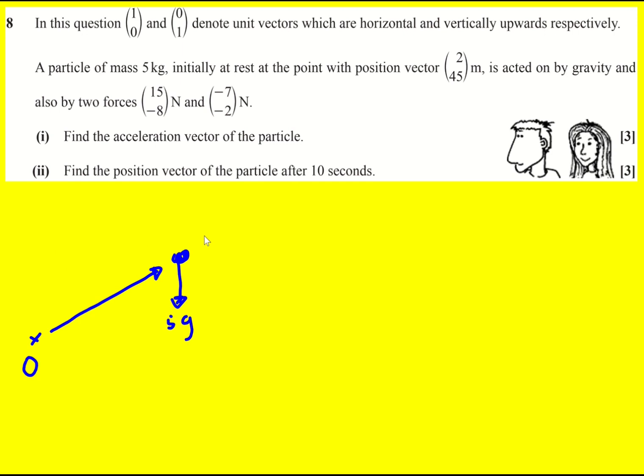And then we've got two other forces: 15, -8. I'm just going to sketch these on my diagram, and then -7, -2. Not essential to do this, and when I did it originally I just skipped it. But we want to work out the acceleration, and so that's first of all going to involve finding the resultant force.